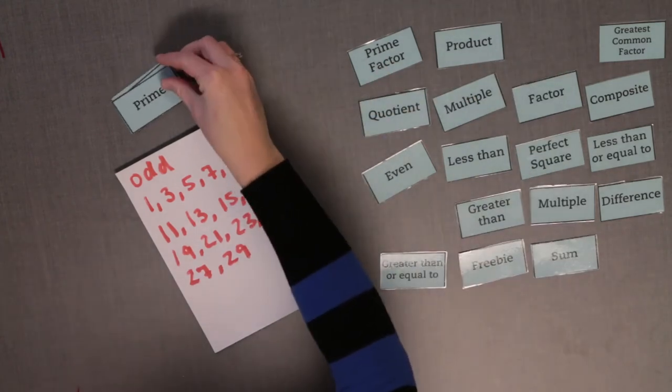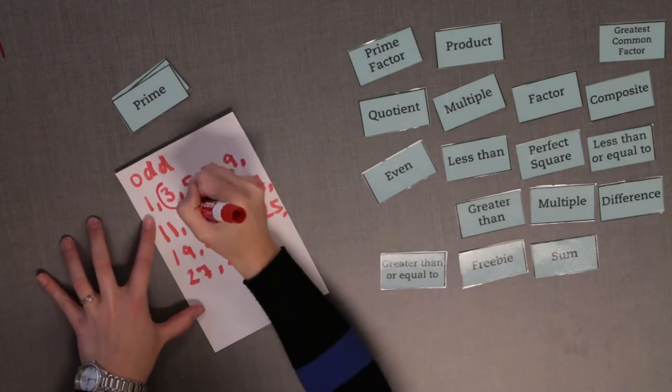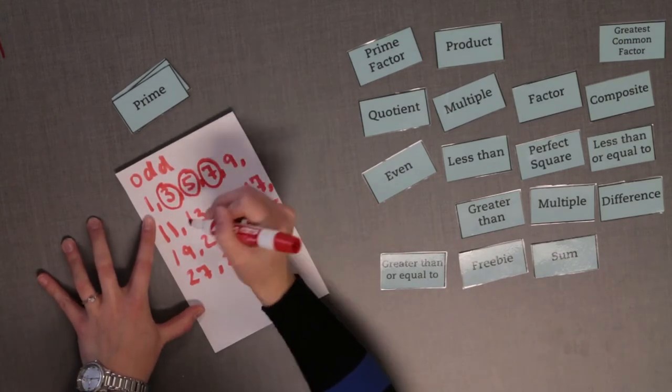Is the number prime? Yes. So the number is odd, prime, and less than 30. What numbers can it be?